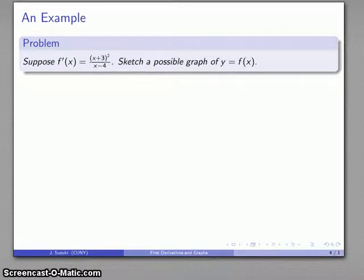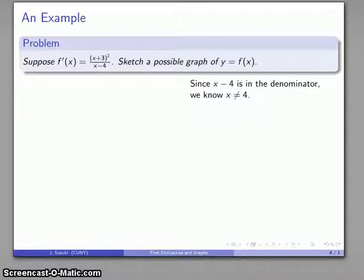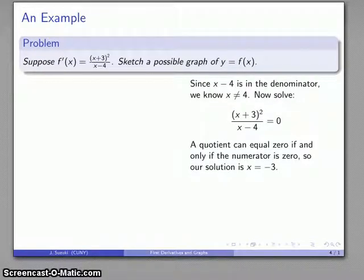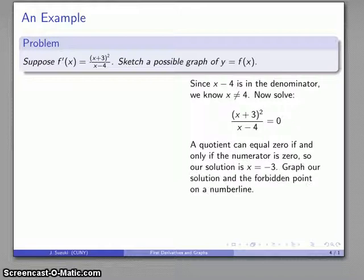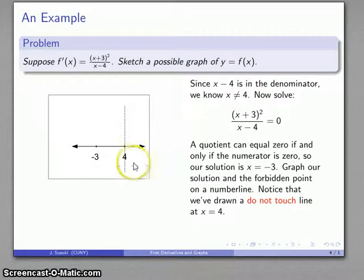Suppose I take a look at another function. Here I have the derivative (x+3)²/(x-4) and first thing to notice here is that because of this x-4 in the denominator, x absolutely cannot equal 4. The other thing I have to do is solve for when the derivative is equal to 0. I have a quotient so the only time I can get a quotient equal to 0 is when the numerator is 0. So the only solution is x = -3. We'll graph our solution x = -3, also our forbidden point x = 4. We'll put those on the number line and throw a dashed line through here to indicate this is a line we may not touch.